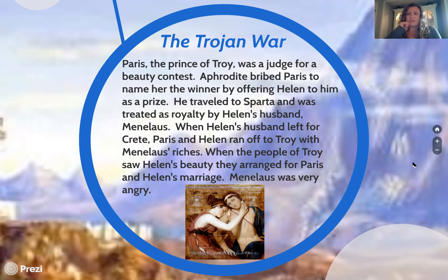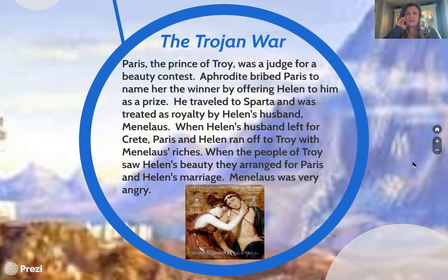Paris and Helen ran off to Troy, taking with them Menelaus's riches. When the people of Troy saw Helen's beauty, they arranged for Paris and Helen's marriage. Obviously her first husband was furious because he had been robbed of both his wife and his gold. It is because of this that the Trojan War begins. My question in all of this is: does Helen get a say? Does she ever get to choose who she wants to be with?